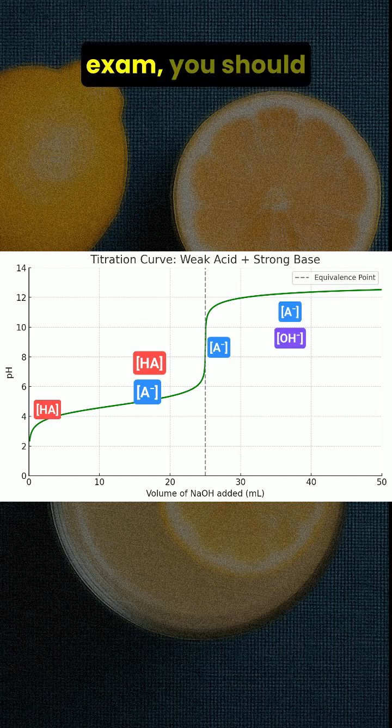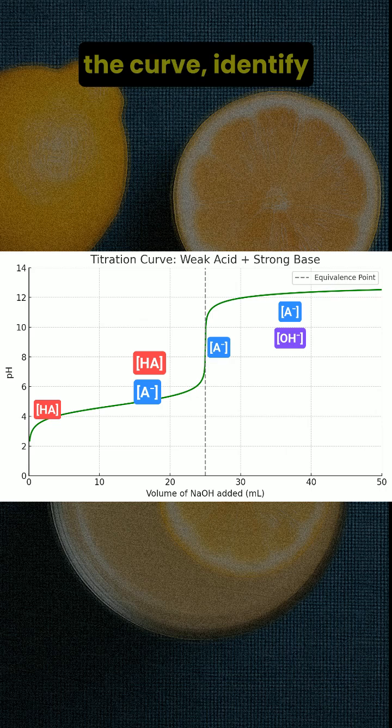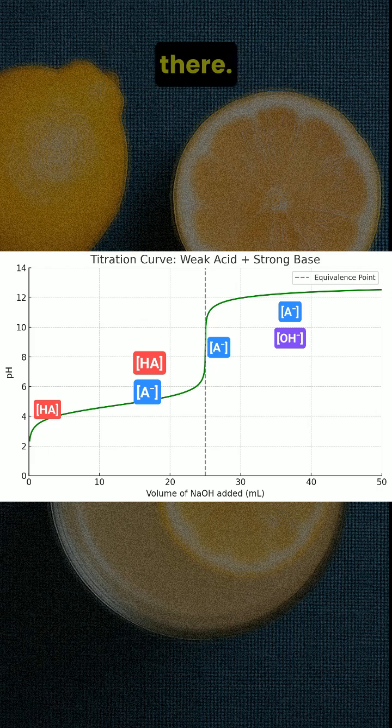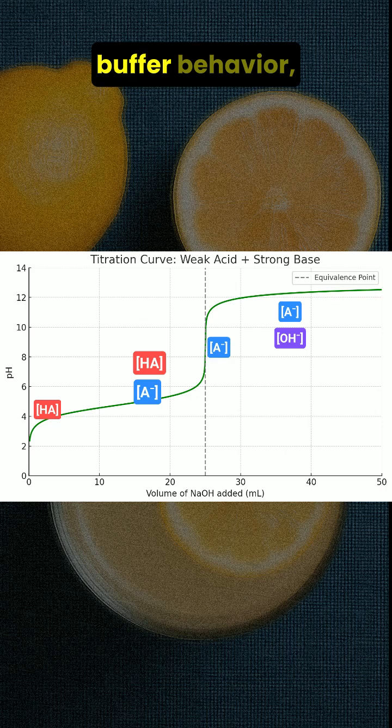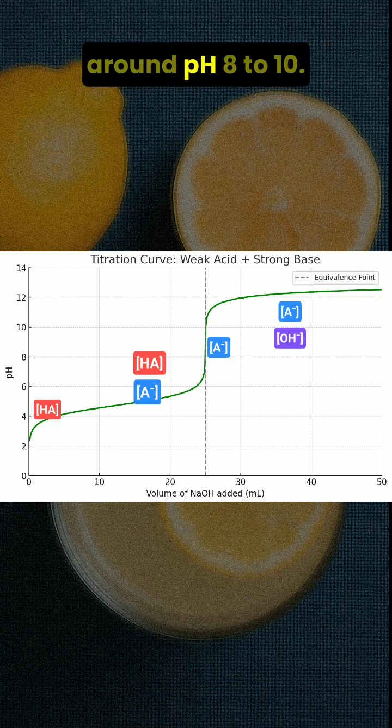In the AP Chemistry exam you should be ready to estimate the pH at key points along the curve, identify the half equivalence point and explain why the pH equals pKa there. You may also be asked to describe buffer behavior, identify major species in solution at different stages, and choose an appropriate pH indicator such as phenolphthalein which changes color around pH 8 to 10.